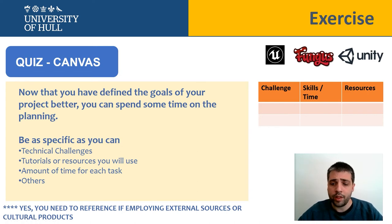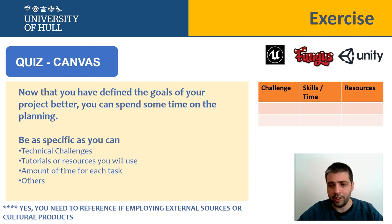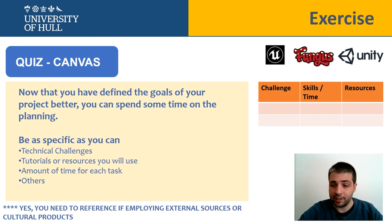As with the first exercise, my advice is to use references if you can. Think about this as a draft of your production dossier. Sooner or later, you need to reference the materials you have employed. Try to follow the Harvard style — the one we use in the whole university. You will save time at the end of the day.